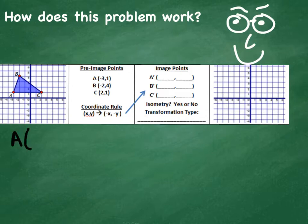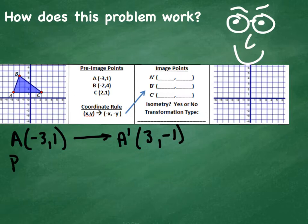Let's take point A at (-3, 1). Using our coordinate rule, we make A prime at the negative of -3 and the negative of 1. This would be its location at (-3, -1). B at (-2,